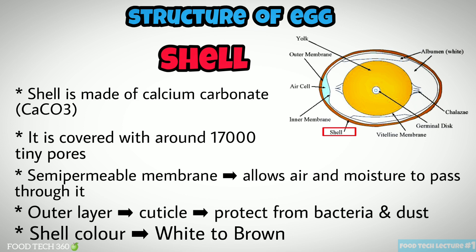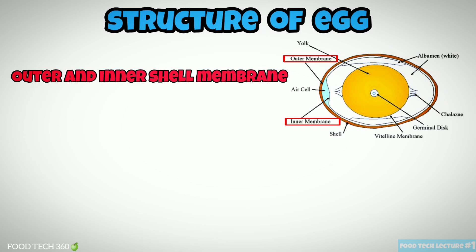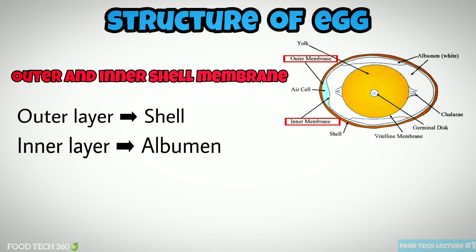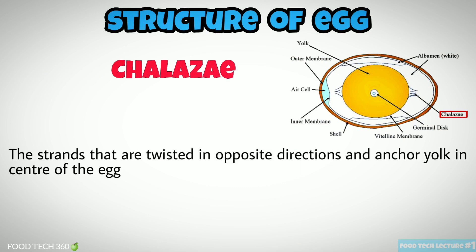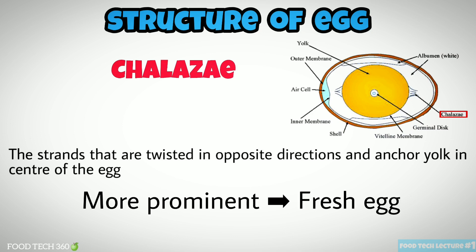The color variation is due to the pigment present during egg formation in the oviduct. The outer and inner shell membranes: the outer membrane sticks to the shell, and the inner layer sticks to the albumin. These two membranes are made partly of keratin and provide an efficient defense against bacterial invasion. The chalazae are strands twisted in opposite directions that keep the yolk in the center of the egg. The more prominent the chalazae, the fresher the egg.